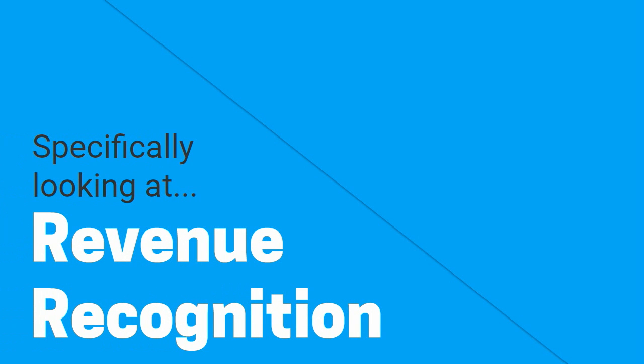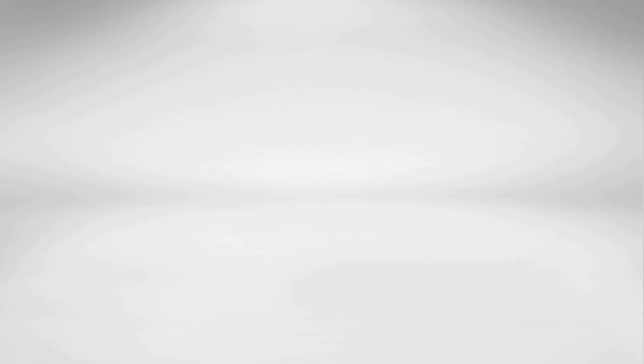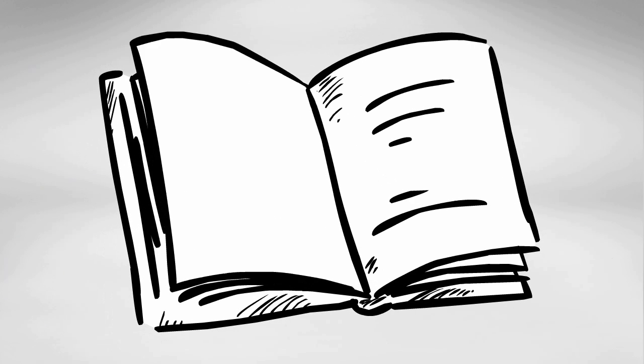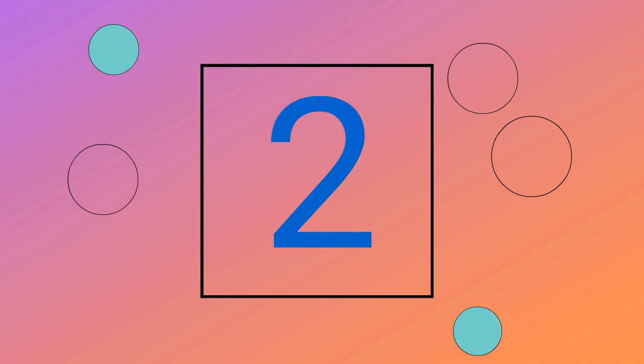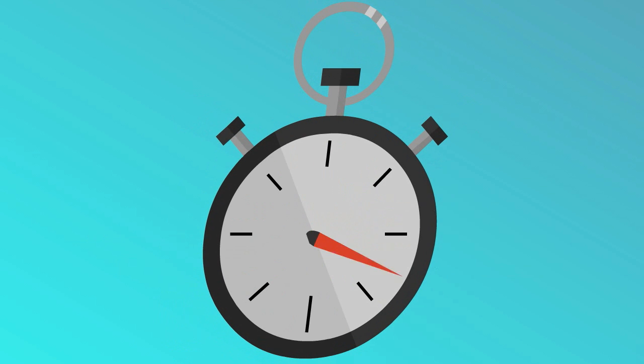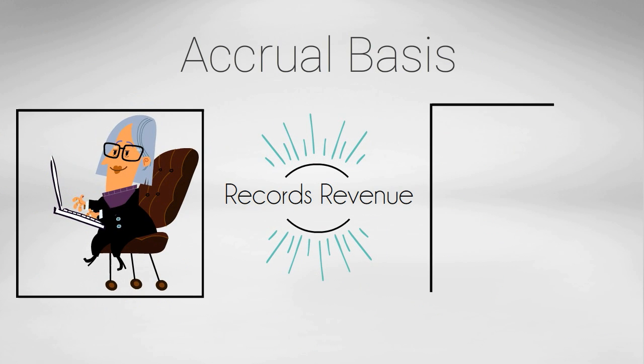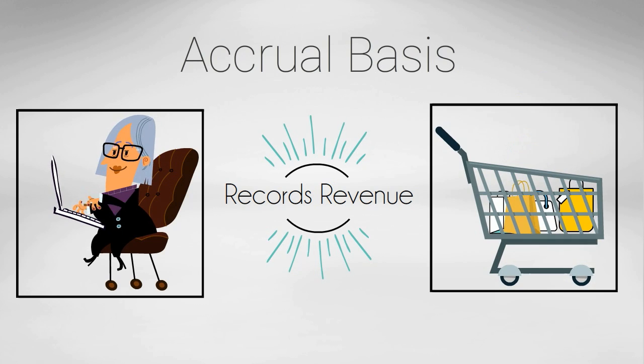The revenue recognition principle enables us to determine the accounting period in which revenues and expenses are recorded. There are two bases for recording revenues and expenses: a cash basis and an accrual basis of accounting, with the differentiating quality being the timing of when revenues and expenses are recorded. Cash basis accounting records revenue when cash is received and expenses when cash is paid. Conversely, the accrual basis of accounting records revenue when it is earned and records expenses when they are incurred.